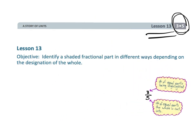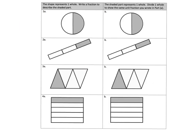All right, so let's get started. So here we have this column right here — the entire shape represents one whole. So this whole circle represents a whole, or this stick represents a whole, or this parallelogram represents a whole, or this rectangle represents a whole. That's what this column stands for. Now this column says the shaded part represents one whole, so the circle is not the whole.